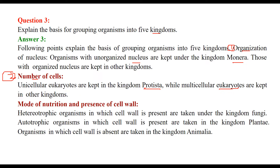The third basis is the mode of nutrition and presence of a cell wall. Heterotrophic organisms in which a cell wall is present are placed in Fungi. Autotrophic organisms in which a cell wall is present are placed in Plantae. Organisms in which the cell wall is absent are placed in Animalia.